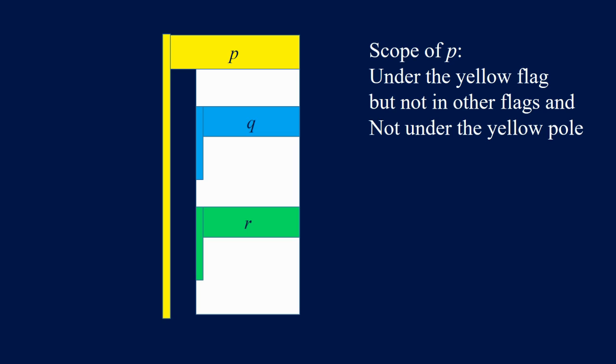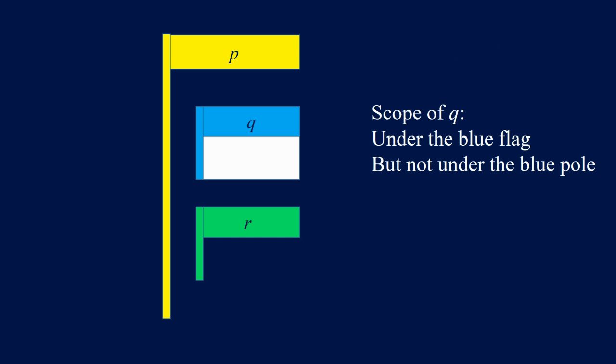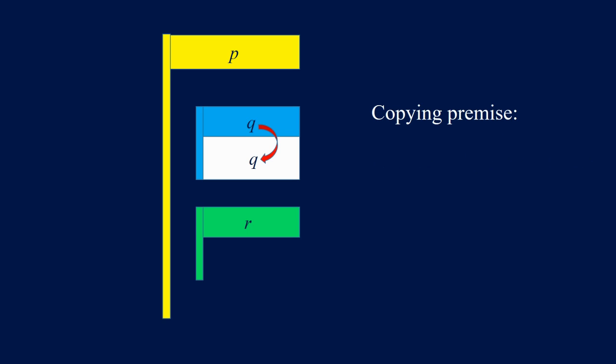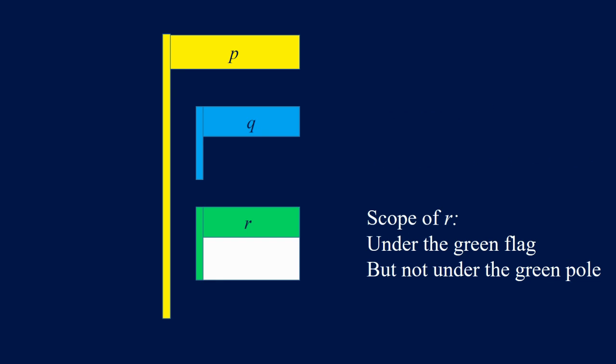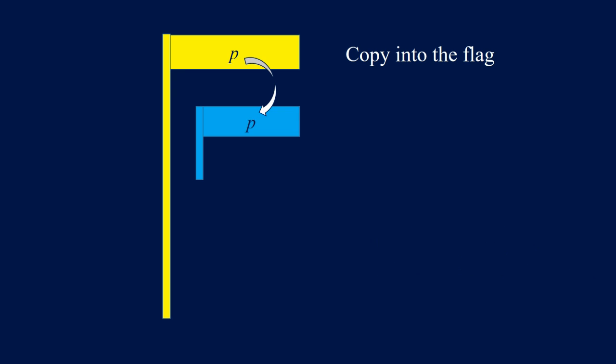You can use the premise P in each scope area, which also means you can copy P to that area — to this area, to this area, or to this area. The scope of the premise Q is only under the blue flag and not under the blue pole, and R can be copied to that area. Copying a premise from one flag to another flag is not allowed.